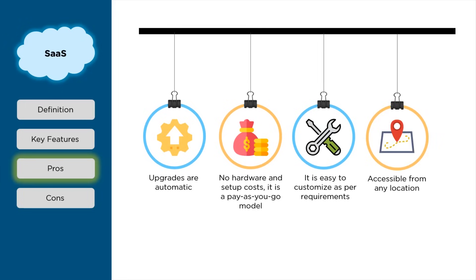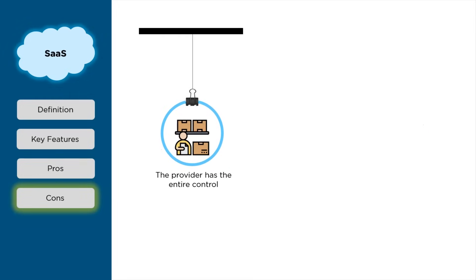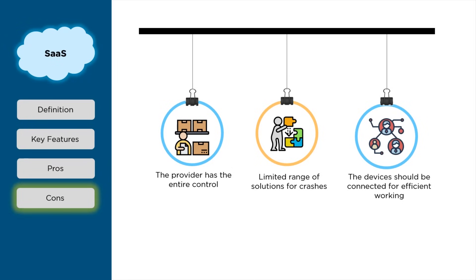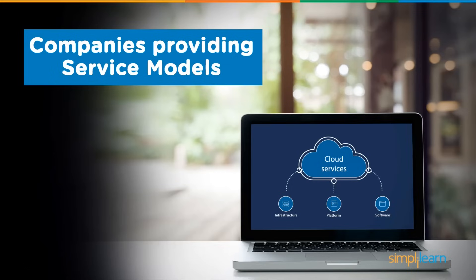Cons of SaaS: the provider has entire control — end users only control giving the requirements. There are only a few solutions available for software crashes. Devices should always be connected for better performance.